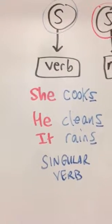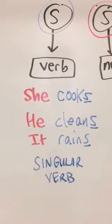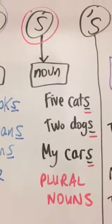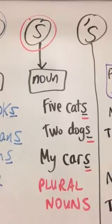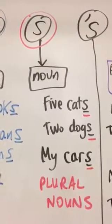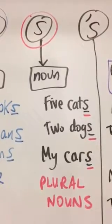Now, if we have a plural noun, we don't have an S on the verb. If we have an S on a noun, that means it's a plural noun. Five cats, two dogs, my cars. Sometimes S is on the plural noun.